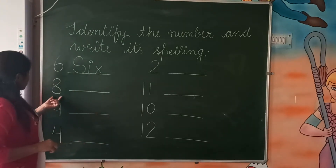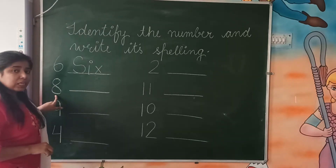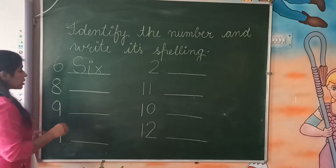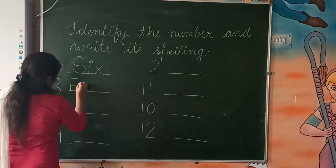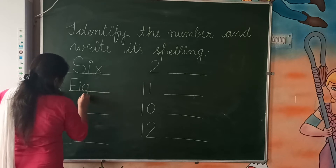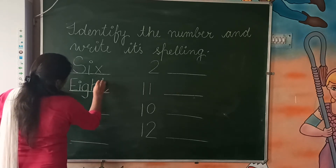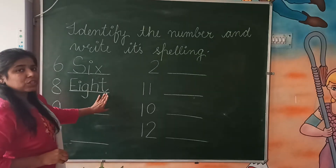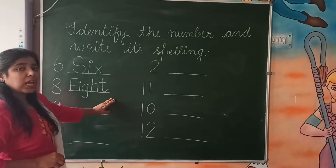Now we will see the next number. Which number is this? Eight. And what is the spelling of eight? E-I-G-H-T, 8.